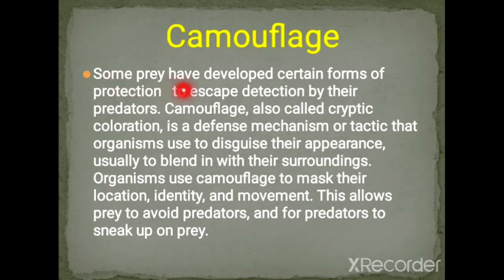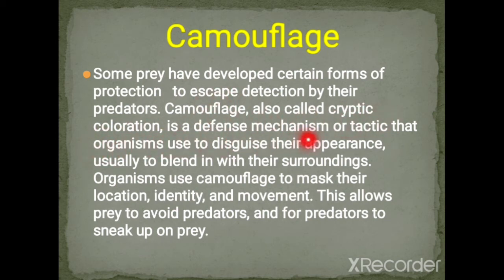Some prey have developed certain forms of protection to escape detection by their predators. One such protection is called camouflage, also called cryptic coloration. It is a defense mechanism that organisms use to disguise their appearance.